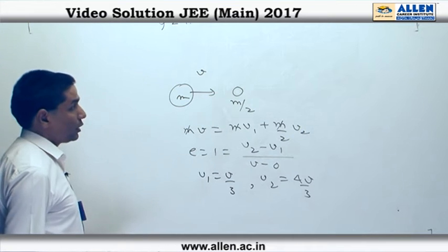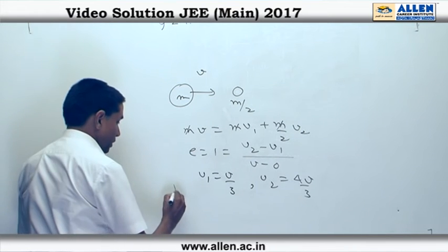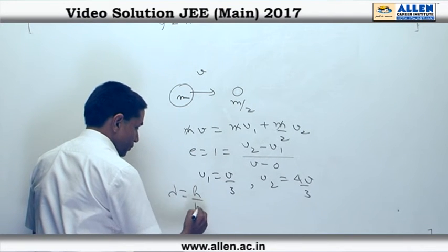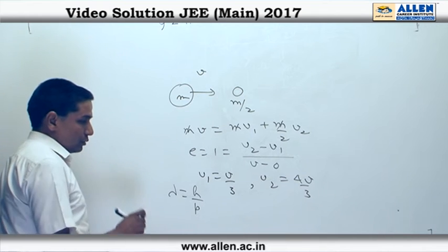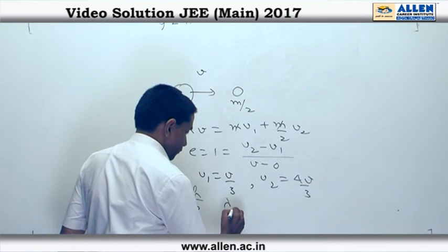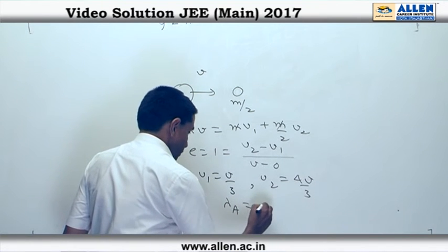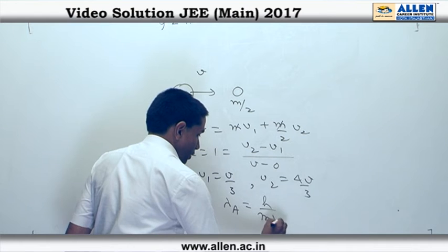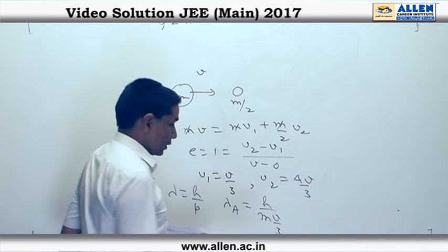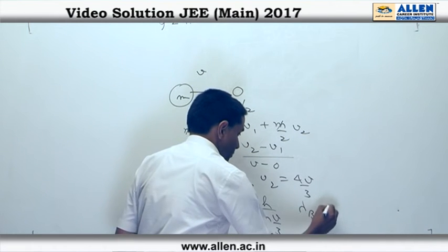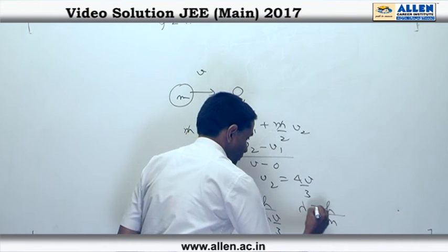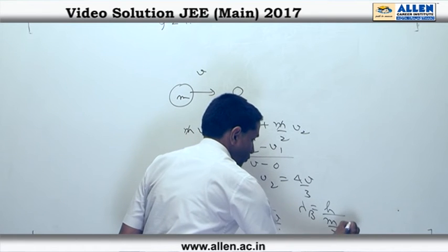Remember that de Broglie wavelength is given by λ = h/p. For particle A, λₐ = h/(m·v/3), and for particle B, λᵦ = h/[(m/2)·4v/3].